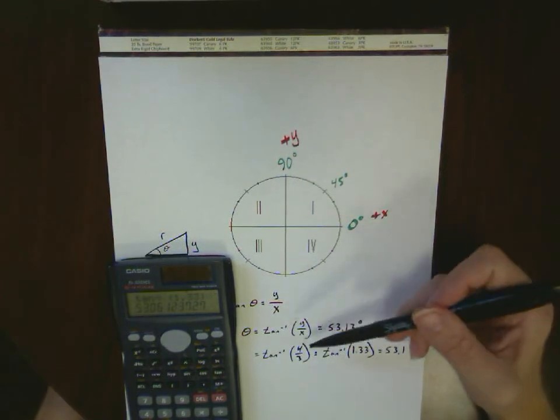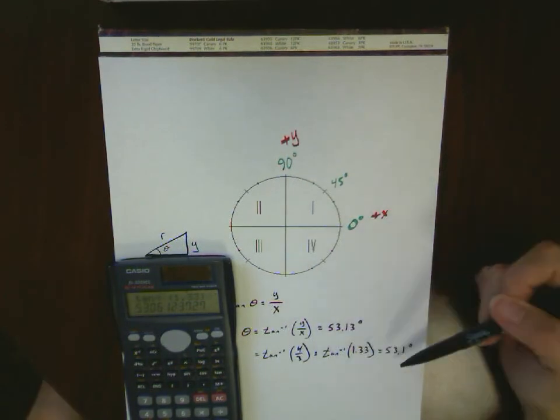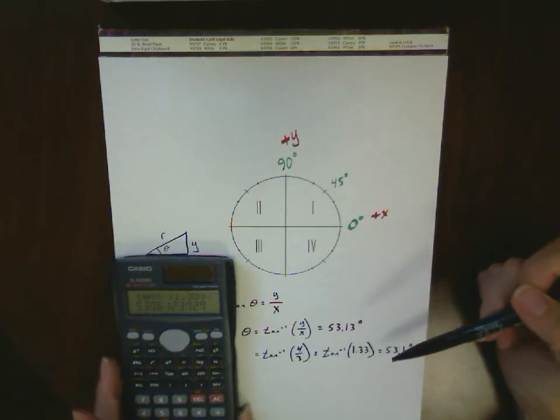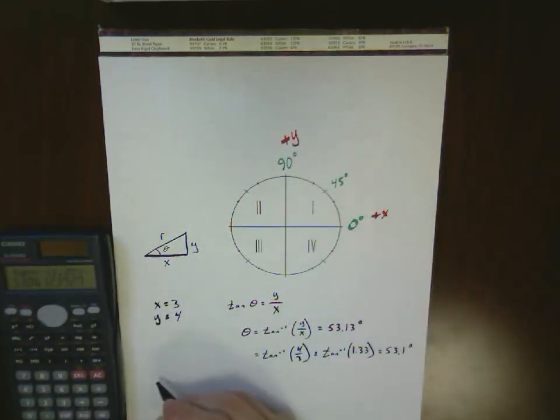If you're working in the first quadrant, that inverse tangent, your calculator gives you an angle, should be the right angle. And again, if I was going to do just one more quick example.